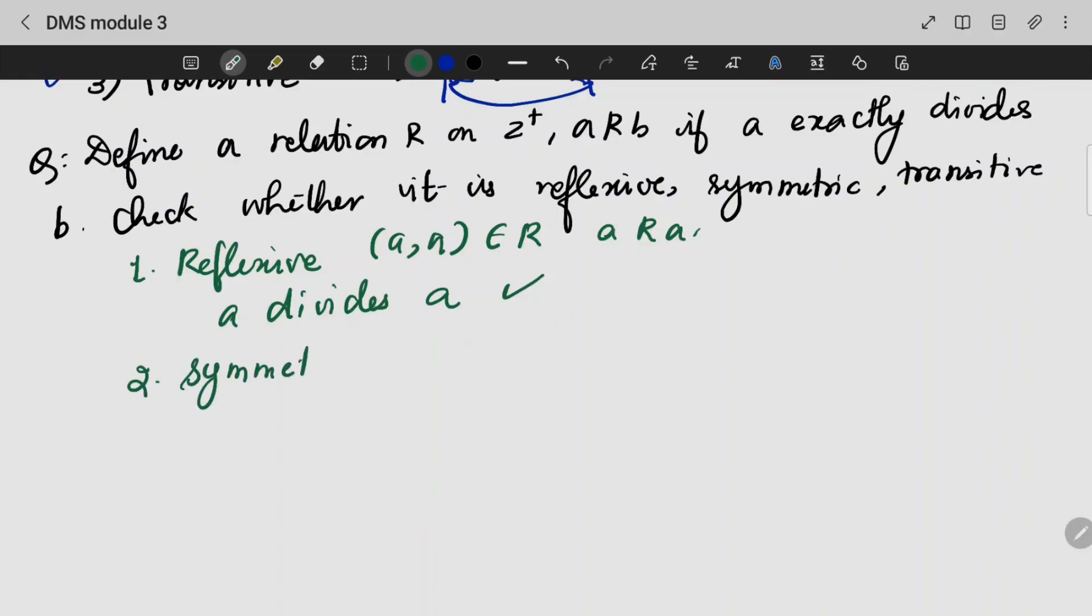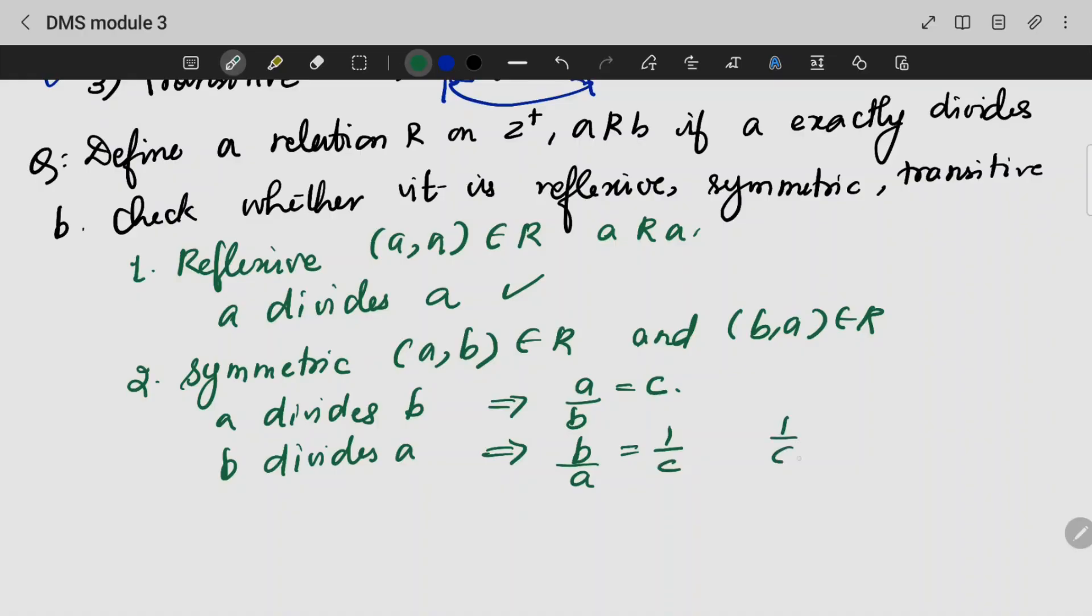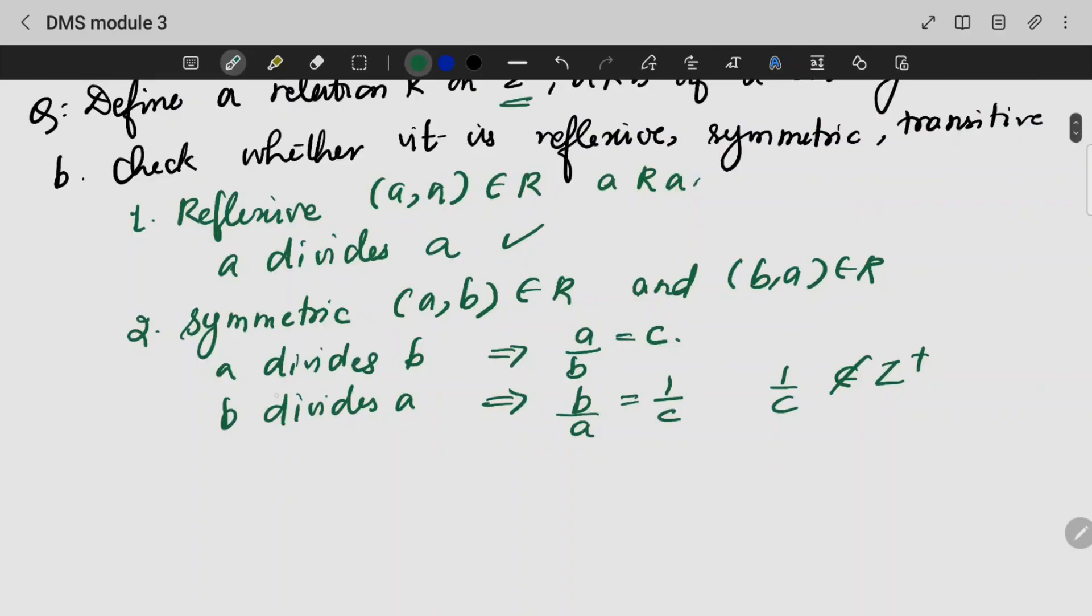Second one is symmetric. If (a,b) is a part of R and (b,a) is also a part of R, then we can say this relation is symmetric. a divides b means a divided by b equals a constant c. But b divided by a equals 1 by c. Is 1 by c a part of my Z plus? No, it is not. Hence, this relation is not symmetric.